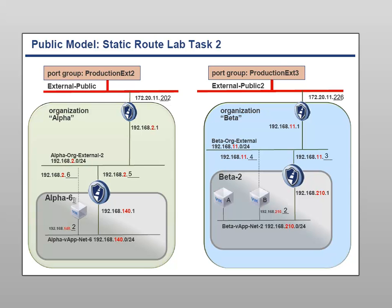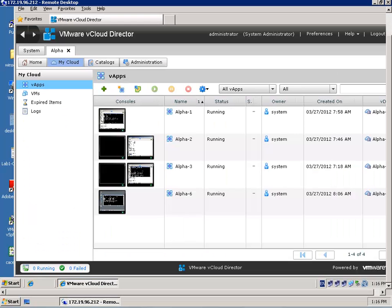What you see is that I have an Alpha 6 virtual machine, created in a vApp called the Alpha vApp, running in the organization Alpha. This virtual machine is connected through a vApp vShield Edge, and another vShield Edge for the organization, connected to the public network. Eventually I want to have access to a virtual machine in another organization — Organization Beta — which also has a vShield Edge device and a vApp in it.